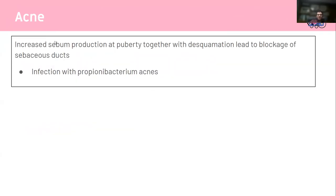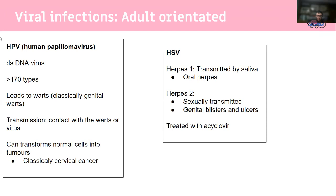Acne occurs because of sebum production with desquamation, which blocks the sebaceous ducts. Regarding viral skin infections in adults: HPV is double-stranded DNA with more than 170 types, leading to warts that can transform into cancer. HSV-1 is oral herpes transmitted via saliva; HSV-2 is genital herpes. Both are treated with aciclovir, which is an antiviral.